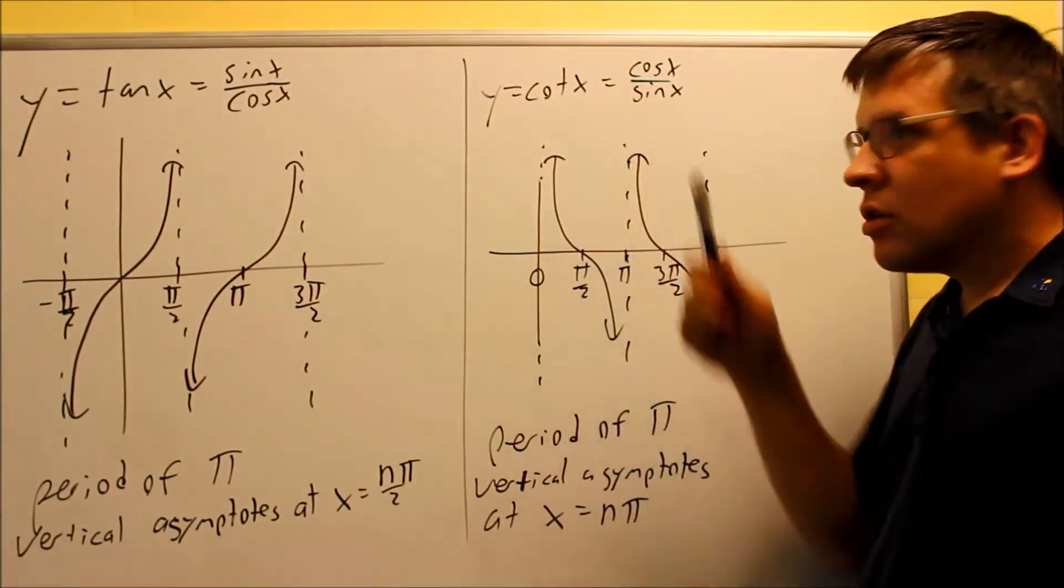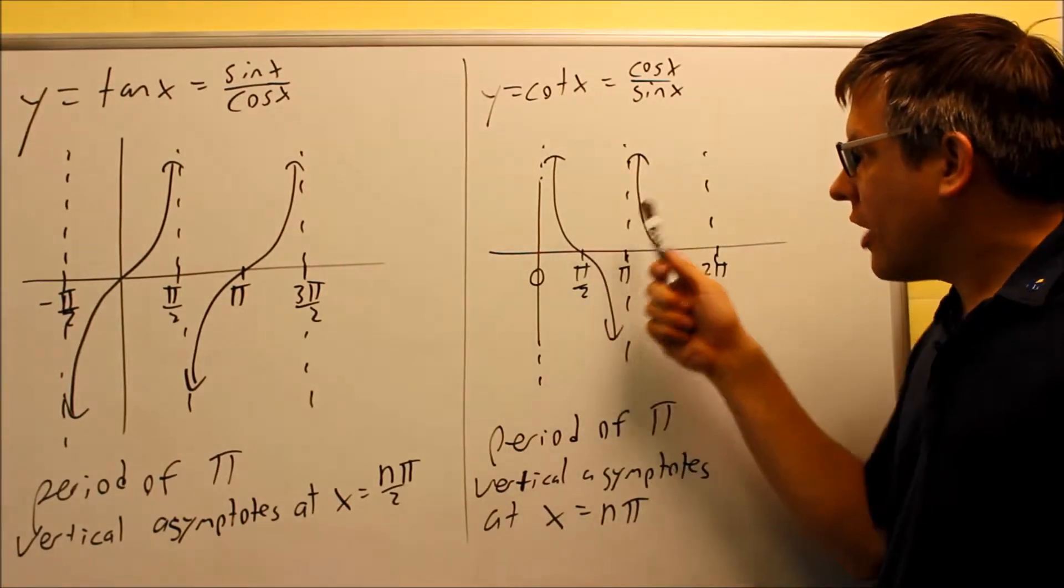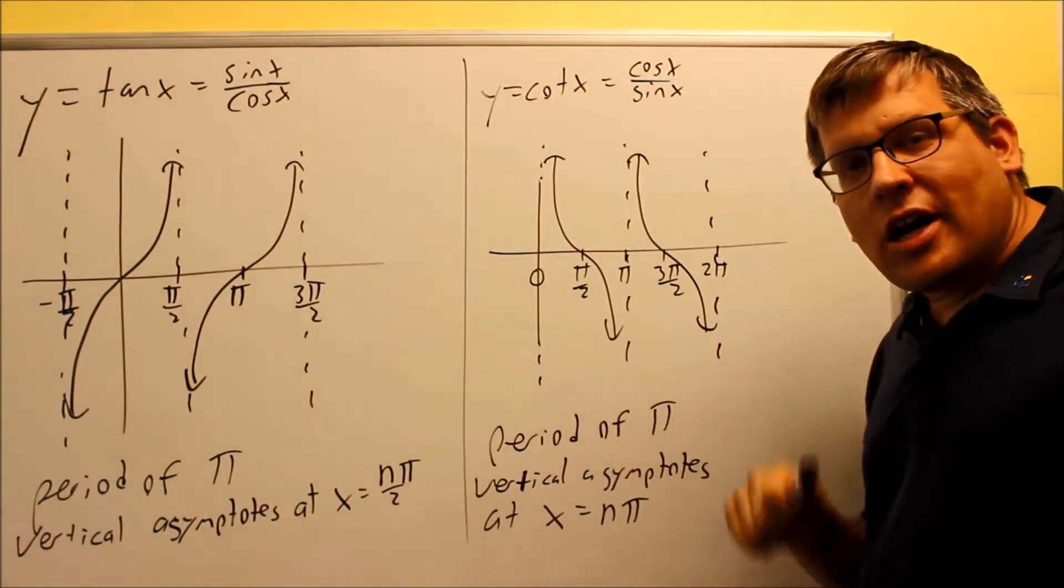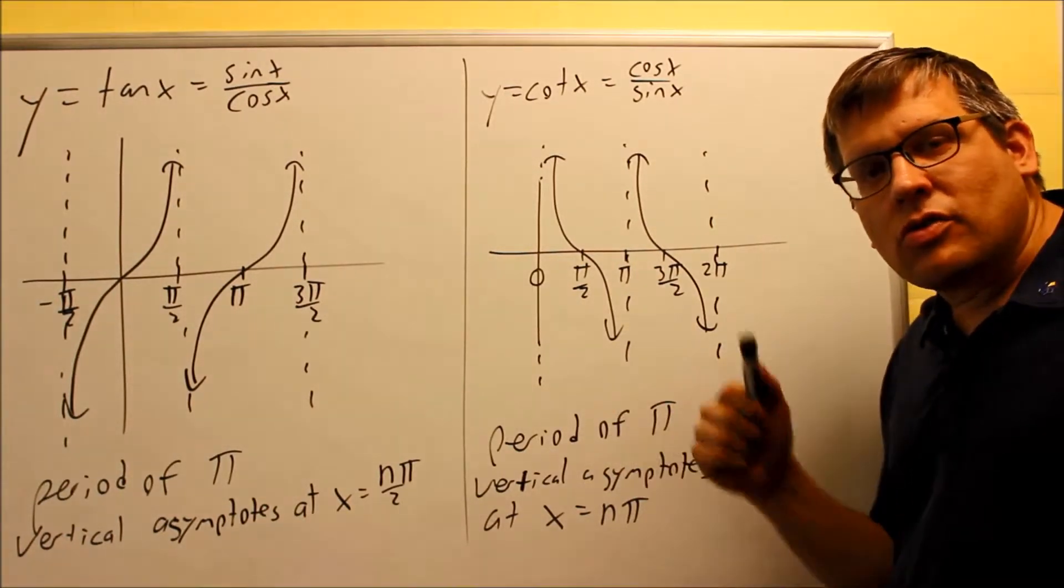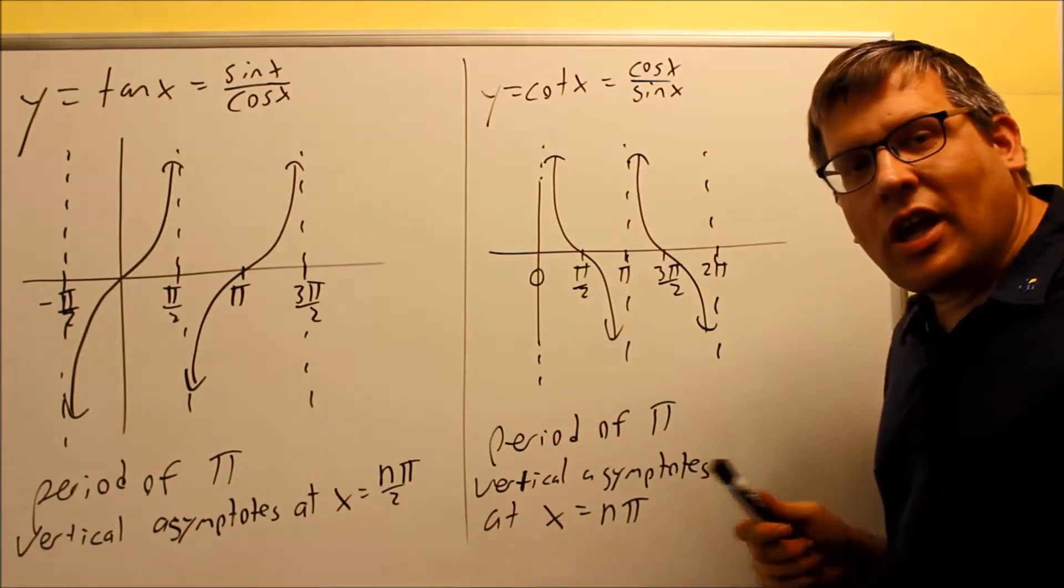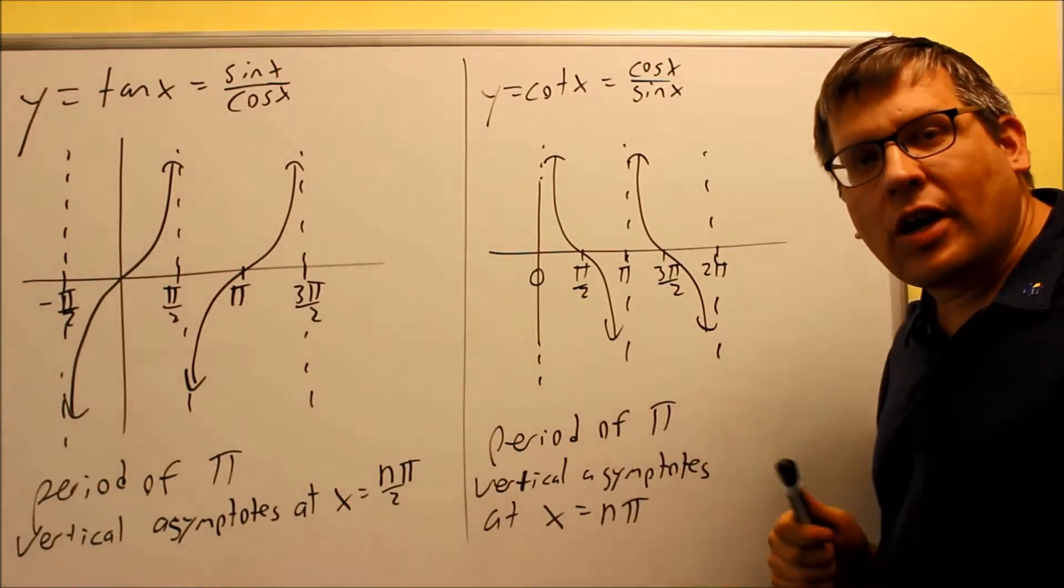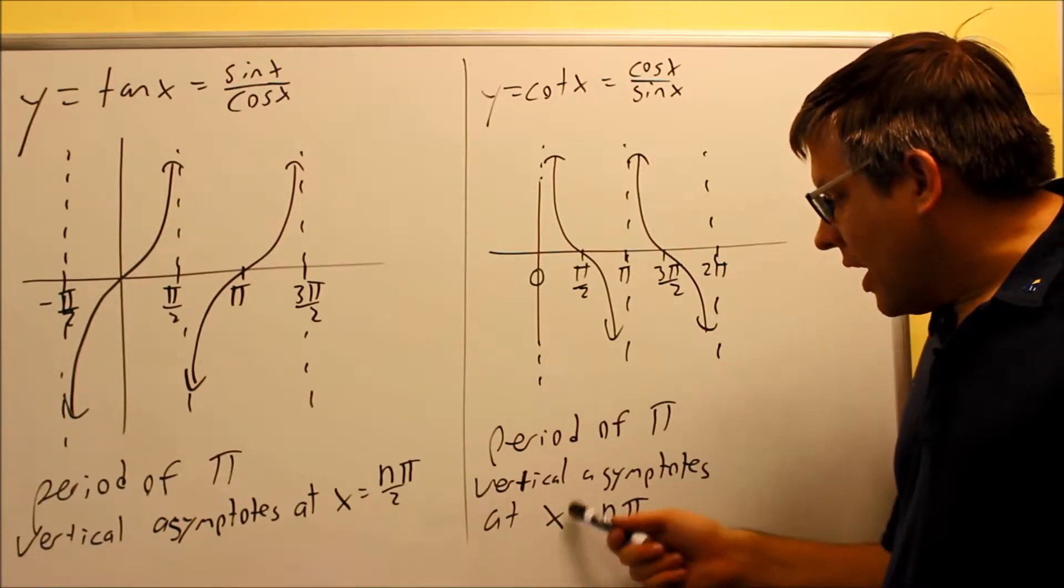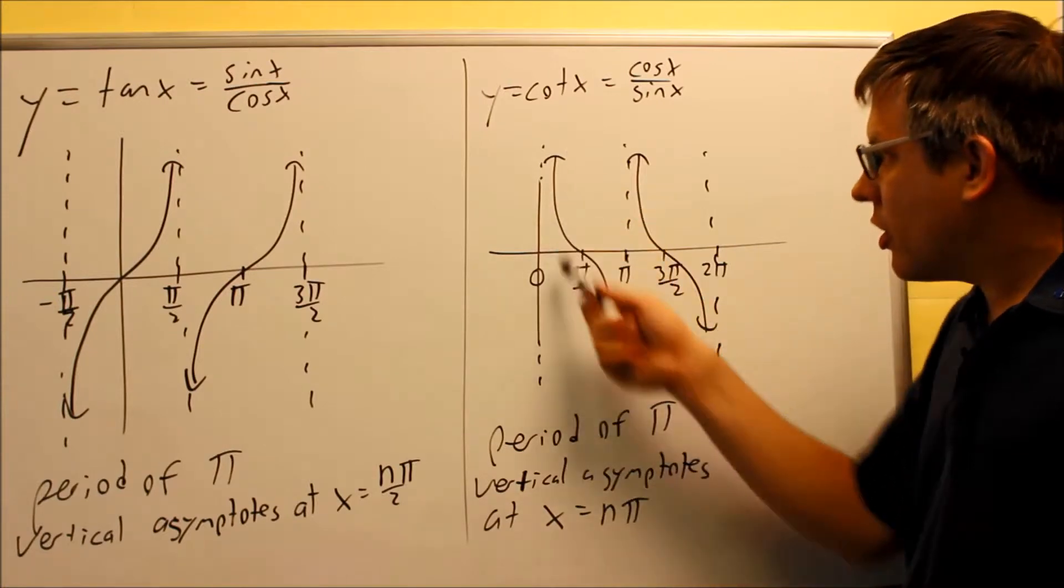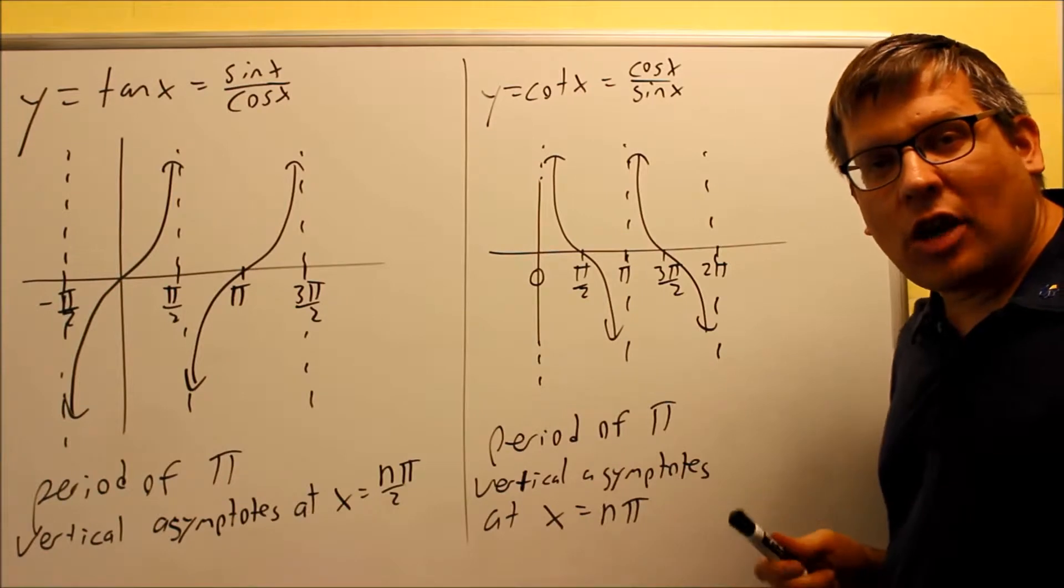Now the other one we're going to look at is cotangent. Cotangent is cosine over sine. So the vertical asymptotes here would be wherever your sine is equal to 0 when you look at unit circle. Now in unit circle, the y value would go along with sine. So the angles that will give you that would be at 0, pi, 2 pi, 3 pi, 4 pi, all of the n pi's, basically. So any kind of multiple of pi, that's where you're going to have vertical asymptotes because, again, that's where your sine equals 0 and you can't divide by 0.